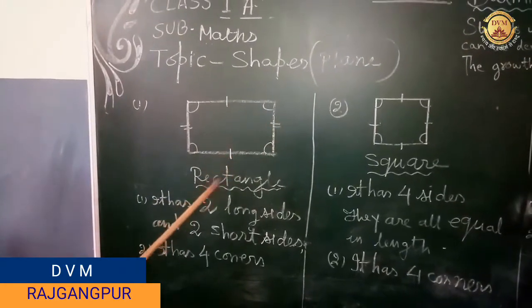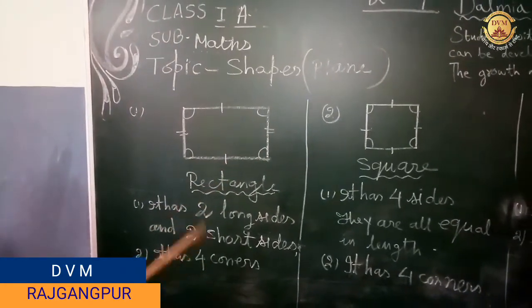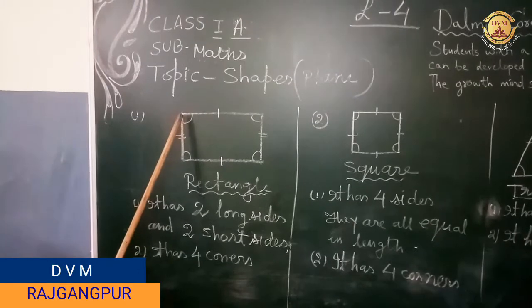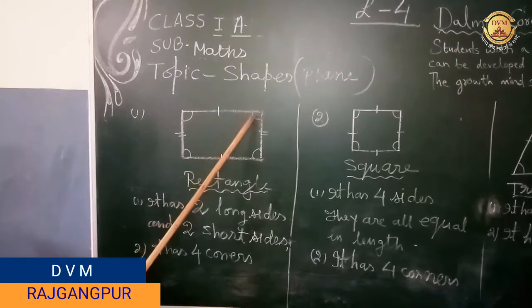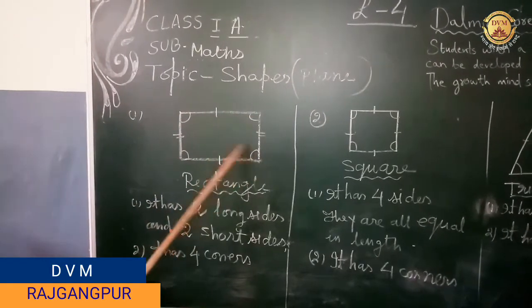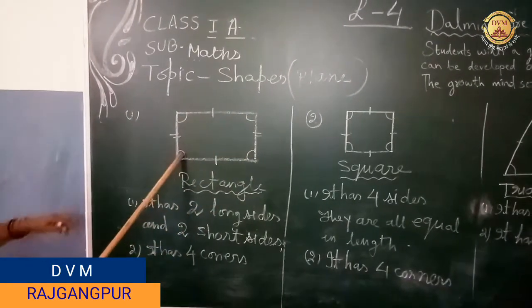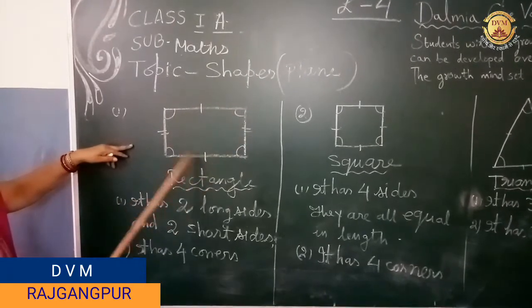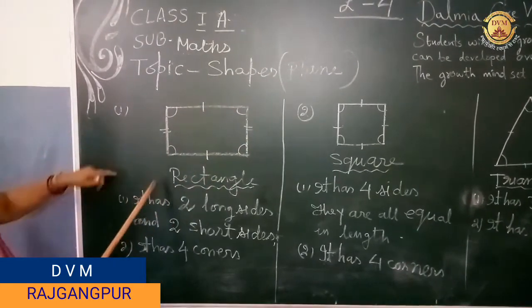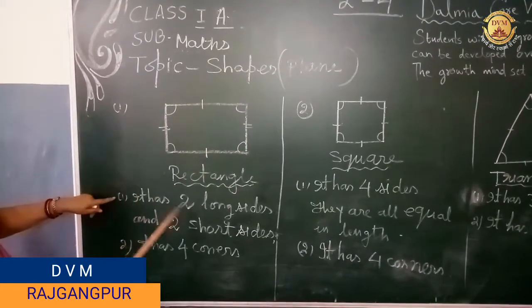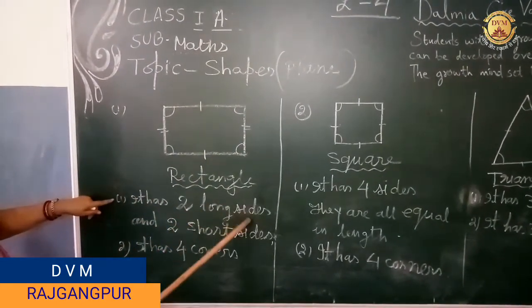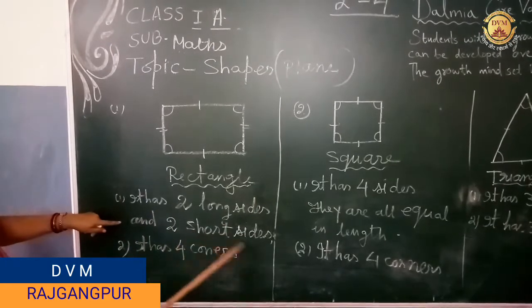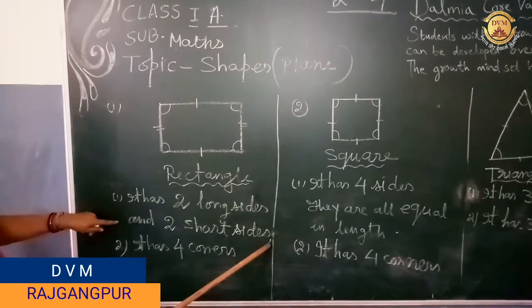It also has 4 corners: 1, 2, 3, 4. So this is the shape of the rectangle — it has 2 long sides and 2 short sides.